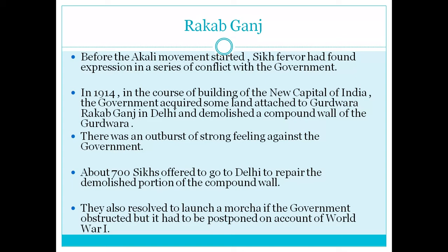There was an outburst of strong feeling among the Sikhs. About 700 Sikhs offered to go to Delhi to repair the demolished portion of the compound wall. When the government did not listen to them, they resolved to launch a Morcha. However, since World War I had started in 1914, their strong feelings against the government had to be postponed on account of the war.